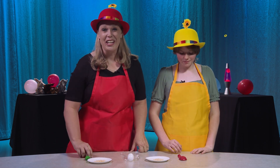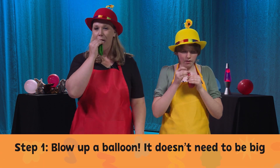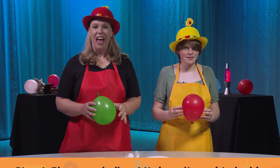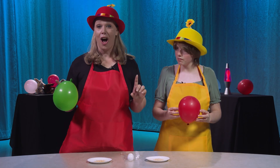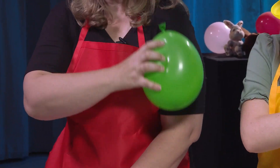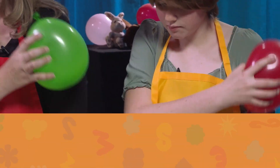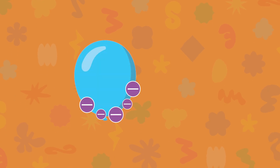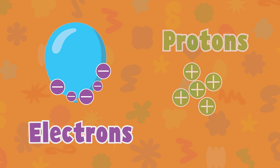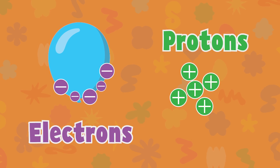Today I brought my friend Michaela with me to help demonstrate why this happens. We're gonna start by each blowing up a balloon. Have you heard the saying opposites attract? So what we're gonna do is rub these balloons on our shirts. When we do that, it's picking up a lot of negative atoms called electrons. Electrons wanna be with protons because opposites attract — negatives and positives.